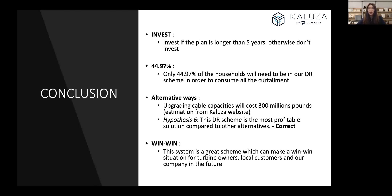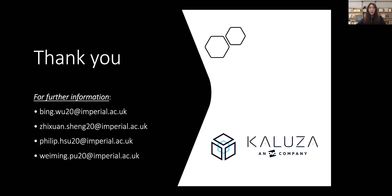To sum up, based on the ROI analysis, if the project is longer than 5 years, we suggest investing in it. In order to consume all the curtailment, the DR penetration rate needs to be 44.97%. Conducting the DR scheme is profitable compared to other alternative ways, such as upgrading the cable capacities, which would require over 300 million pounds. Choosing a smart demand response scheme can create a win-win result for all parties involved, including Calooza, the local community, and consumers. That's all for our presentation. Thank you for listening. If you are interested in our findings and suggestions, please contact us for further information.